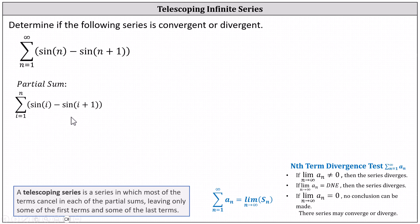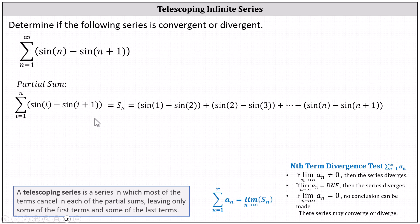When i equals 1, we have sine 1 minus sine 2, plus when i equals 2, we have sine 2 minus sine 3, and so on. The last value of i is n, which gives us plus sine n minus sine of the quantity n plus 1.